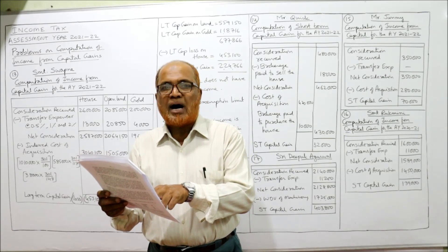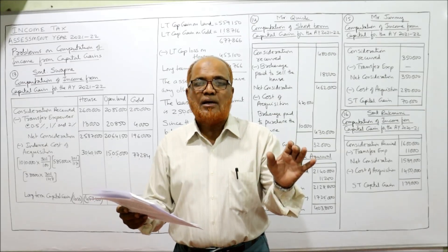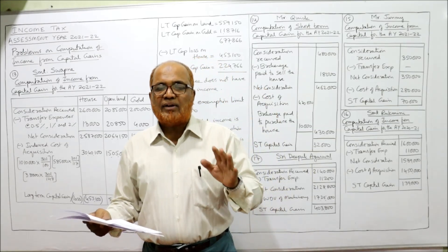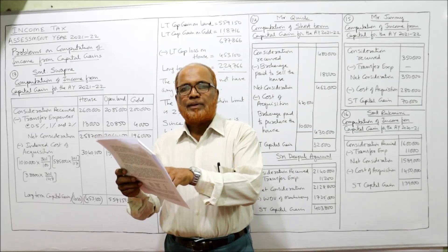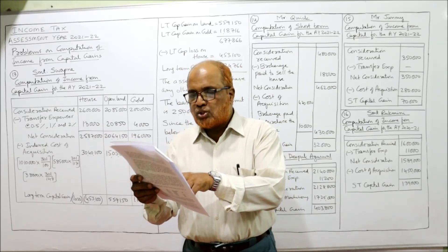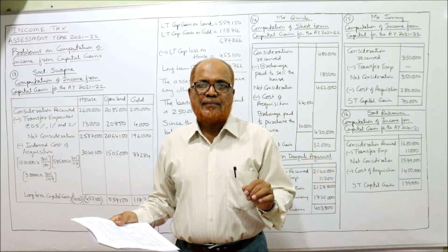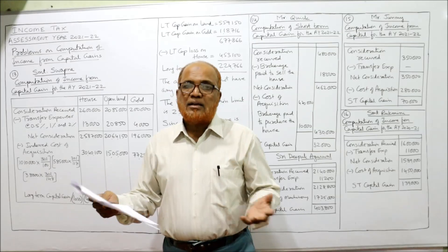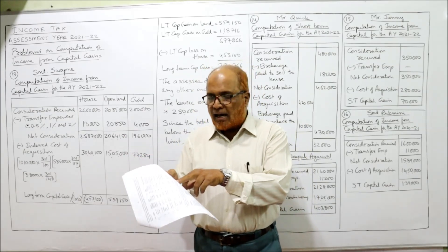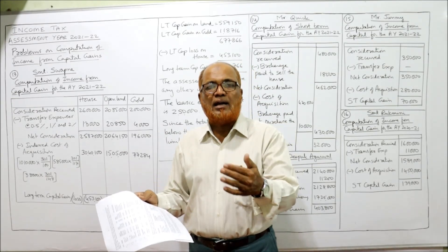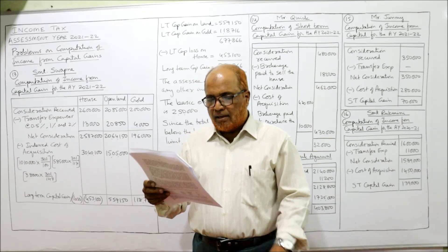The house was purchased on 21st March 1999 and sold on 13th January 2021. It's a long-term capital asset because the asset is held for more than three years. Open land in the city was purchased on 1st May 2005 and sold on 13th January 2021 — again a long-term capital asset. Gold was purchased on 4th May 2009 and sold on 13th January 2021, again held for more than three years. So all three assets are long-term capital assets and the gain arising will be LTCG.